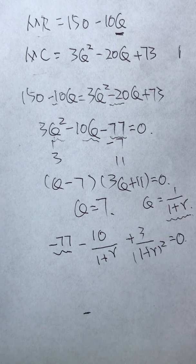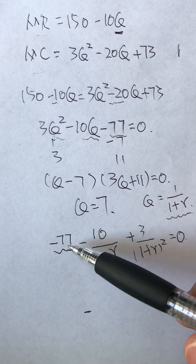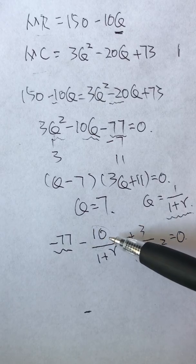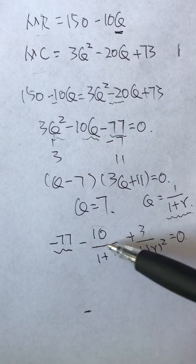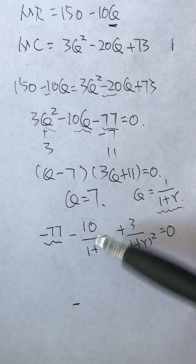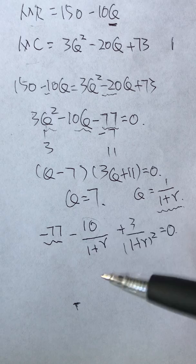And it will look like this: plus 3 times (1 plus r) squared equals zero. Now we have a cash flow problem. The initial payment is negative 77, the first payment is 10, and the second payment is 3.